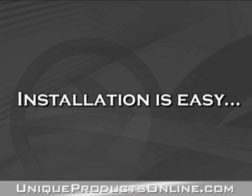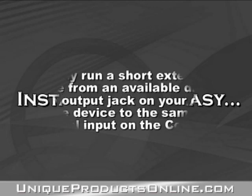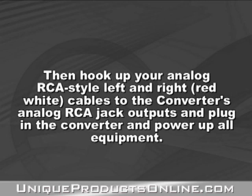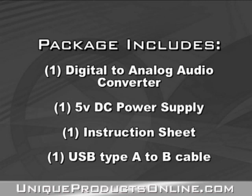Installation is really easy. You'll simply run a short extension cable from an available digital audio output jack on your digital source device to the same type of digital input on the converter. Then hook up your analog RCA style left and right red and white cables to the converter's analog RCA jack outputs. Plug in the converter and power up all the equipment. That's it — you're done.